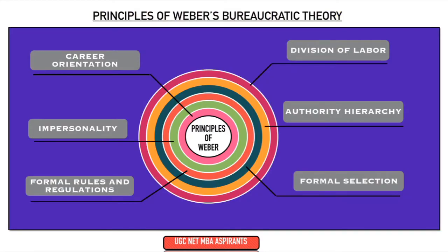Coming to the principles of Weber's bureaucratic theory. First is division of labor based on specialization and skills. Second is authority hierarchy based on levels from top level to lower level management. Third is formal selection of employees. Fourth is formal rules and regulations that everyone in the organization should follow. Fifth is impersonality — no personal relationship between employees. Sixth is career orientation where employees are given opportunity to build their own careers.